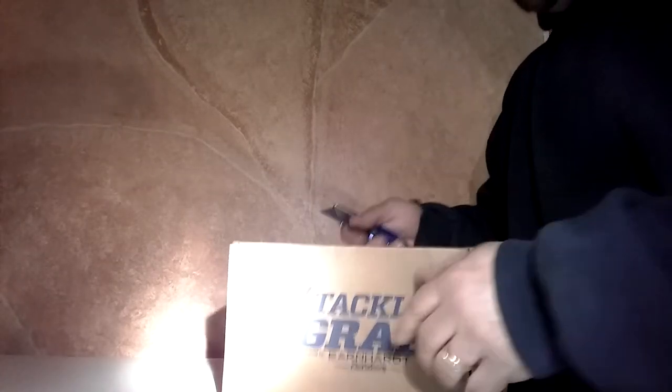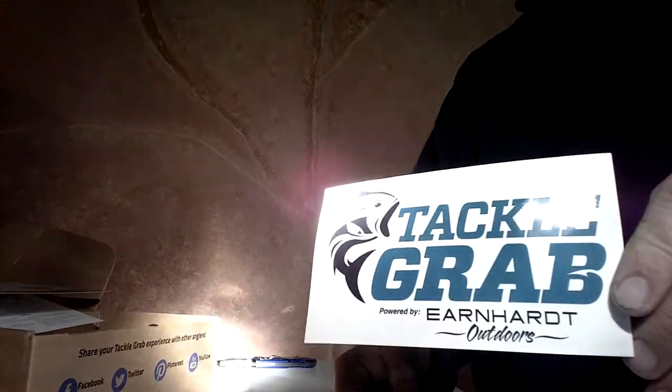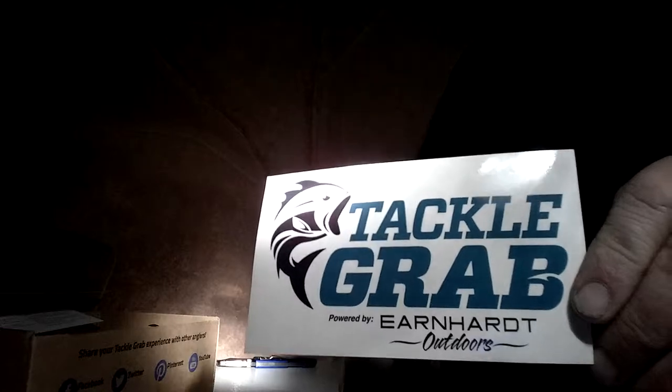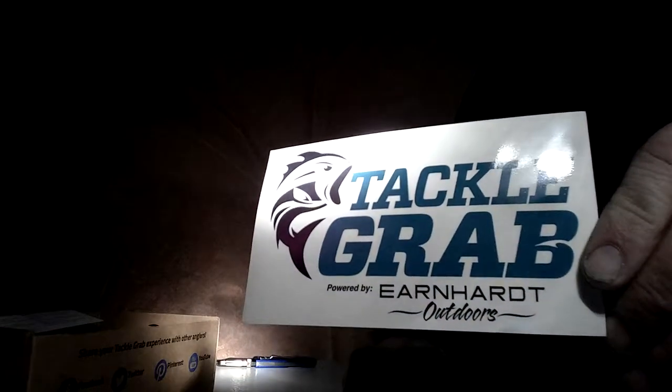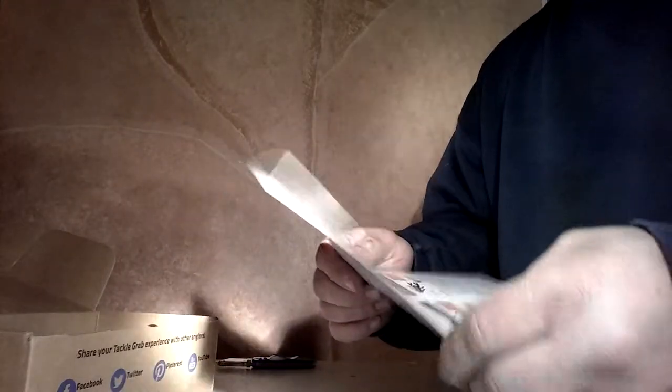First thing in every box, you get a Tackle Grab sticker. You can put that on your boat, put on your wall if you like. I'm going to put mine on my tackle box. That's a nice sticker. Next thing out of the box, there's a card that tells you what's in your box and the prices on them. So let's get in here and I'll show you what's going on.